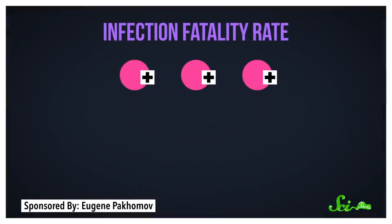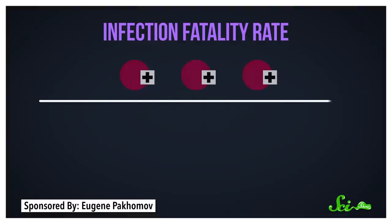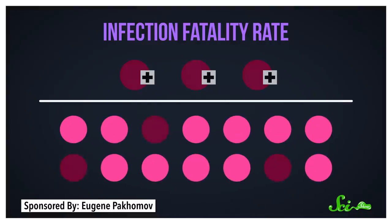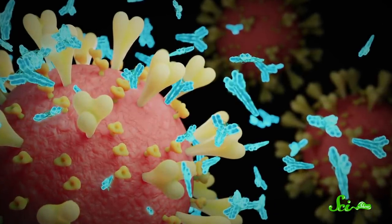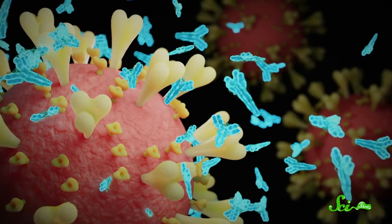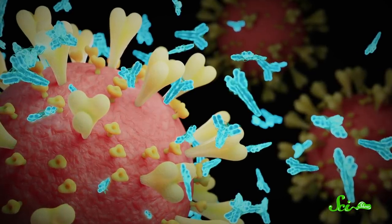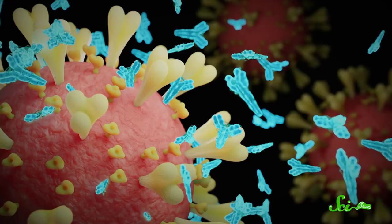Meanwhile, the infection fatality rate is much harder to monitor. This is the number of confirmed deaths divided by the total number of infected people, whether or not they got sick and got an official diagnosis. And this number is based on antibody tests done on a representative sample of a population, tests that show someone's immune system has encountered and responded to the virus.